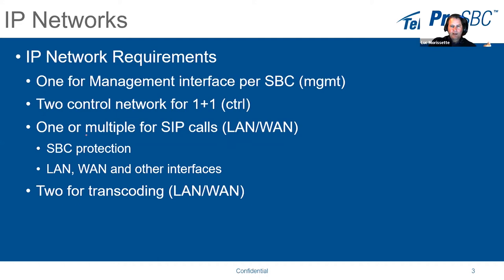You can have one or multiple interfaces for SIP calls. In the configuration, they are called LAN 1 interfaces, because they are usually used for a local area network or a wide area network. These interfaces are protected by the SBC functionality, so there is security included. Some installations have only one interface used for all traffic, but most of the time you have at least two — one for the wide area network and one for the local network. Some installations have many more interfaces to interconnect to various networks.